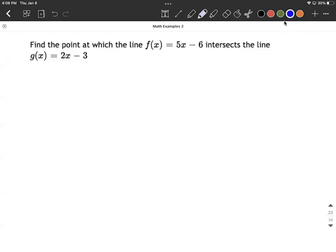We want to find the point where two lines intersect. So we're given two functions: f of x equals 5x minus 6, and g of x equals 2x minus 3.